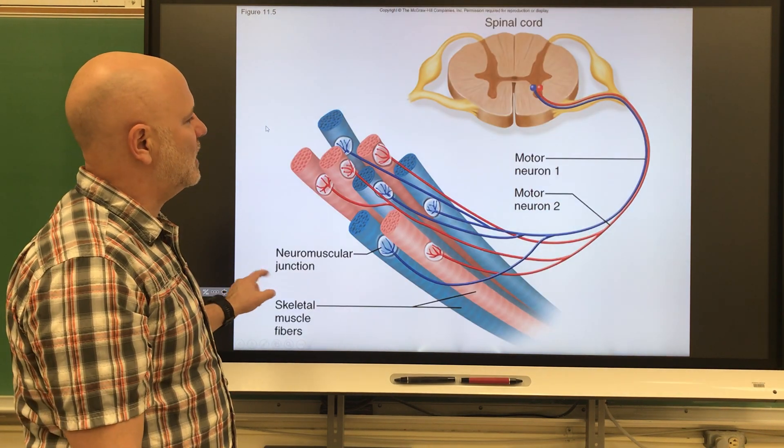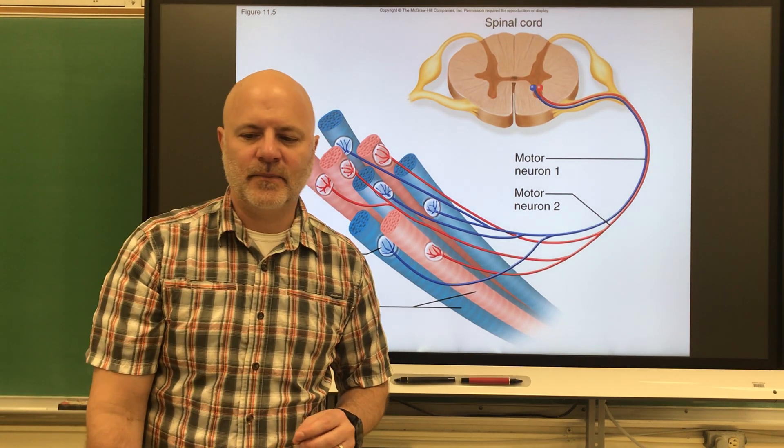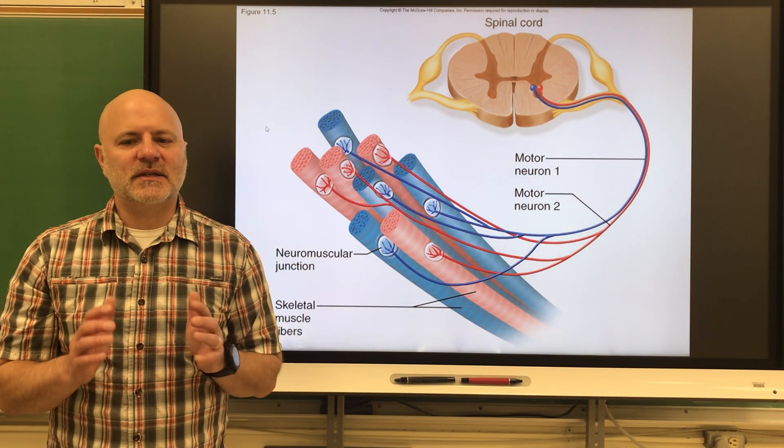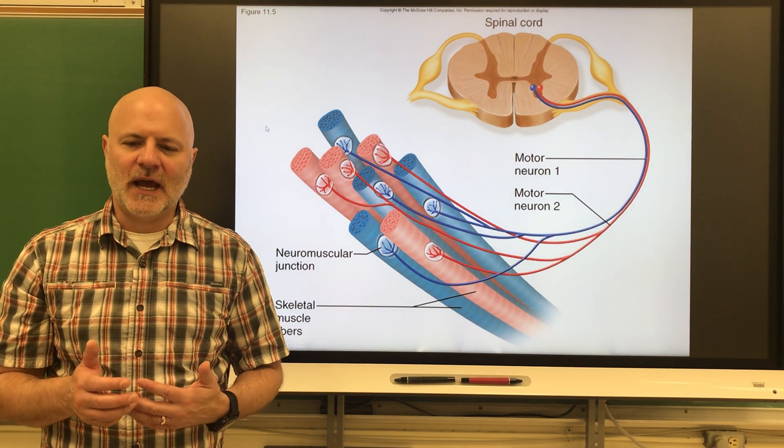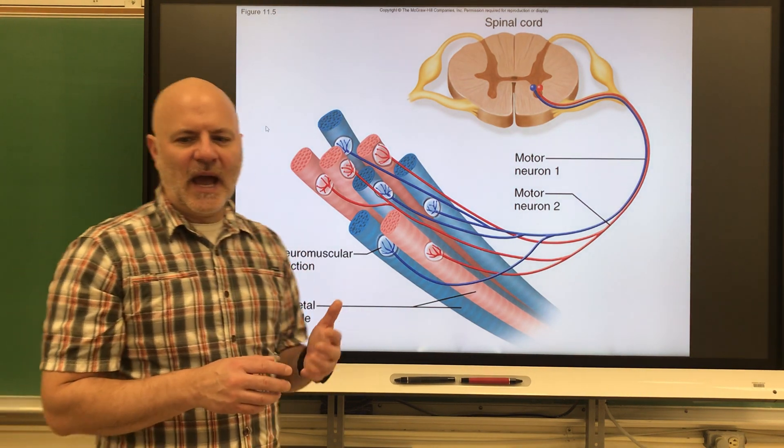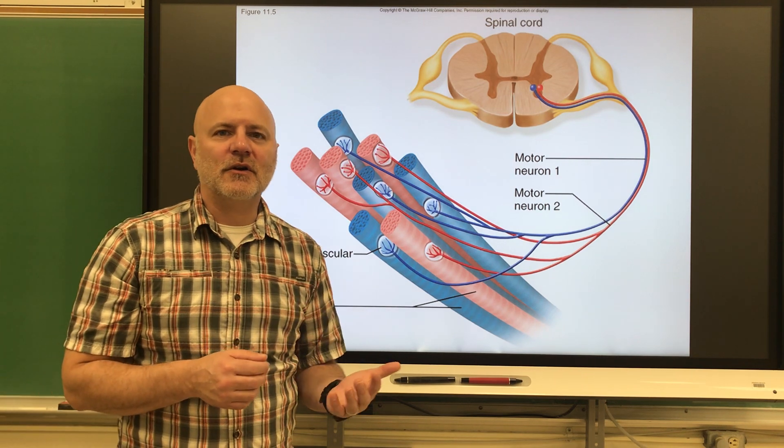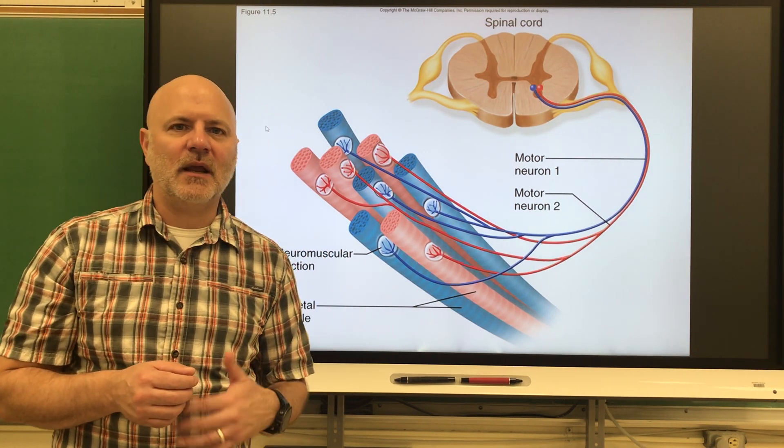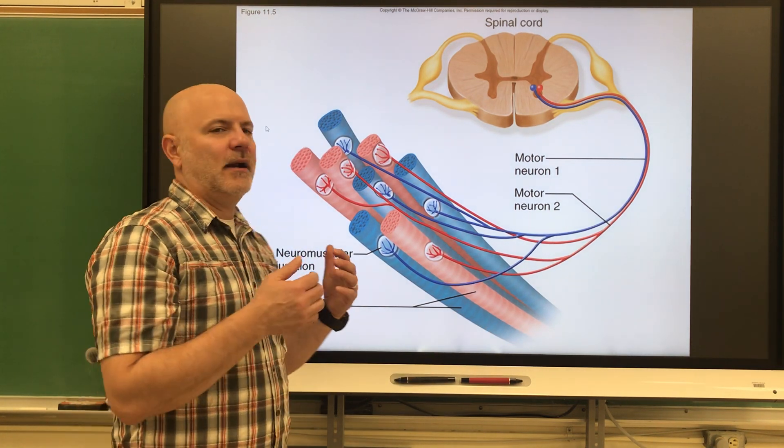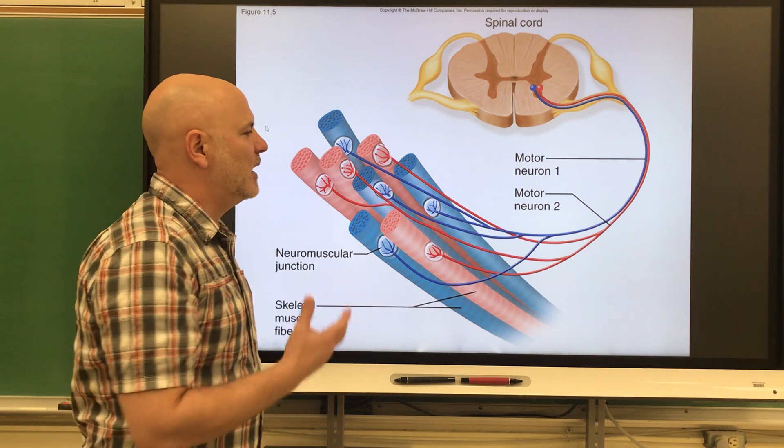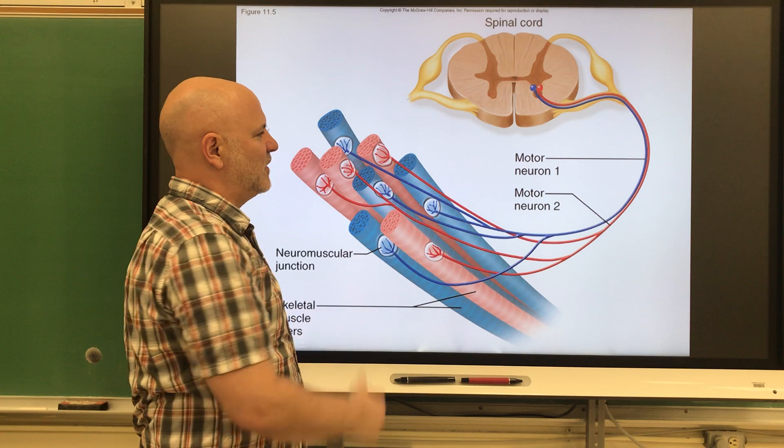The next thing is muscle tone, a sustained partial contraction of a muscle. This is going to stabilize joints and maintain posture and keeps muscles ready to act. Muscle tone works by partial contraction of muscle that occurs by rotating of the motor units. I've been standing for a little while. I haven't fallen over because my muscles get tired out. The reason is I keep shifting, not consciously, but I keep shifting my motor unit.